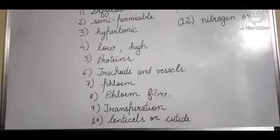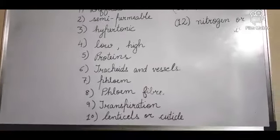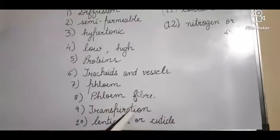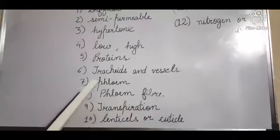Then blank is a process by which the plants release water in form of water vapors. The loss of water through the aerial parts of the plant - this is transpiration.